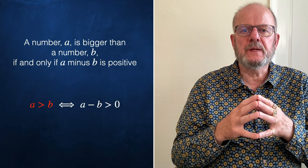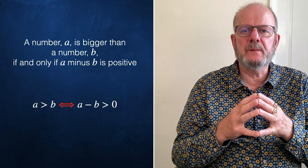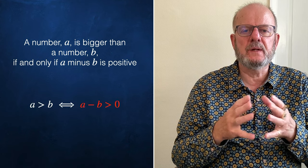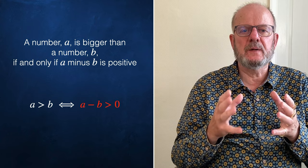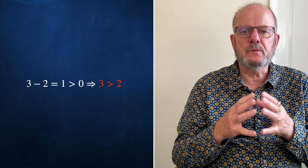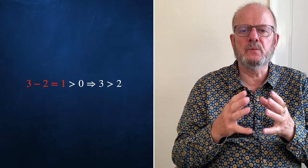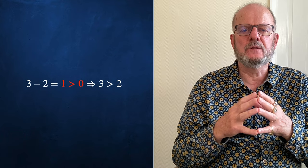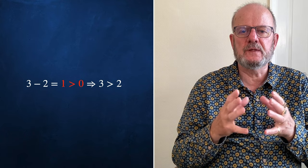A number A is bigger than a number B exactly when A minus B is bigger than 0. In other words, A is bigger than B exactly when A minus B is positive. Try it. 3 is bigger than 2 because 3 minus 2 equals 1, and 1 is bigger than 0. In other words, 3 minus 2 is positive, so 3 is bigger than 2.